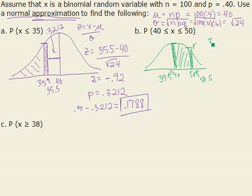So I'm going to have to take 39.5 minus 40 over my square root of 24 to get a z-score. And my z-score is negative 0.10. Negative 0.10 has a probability, this teeny tiny little probability of 0.0398.